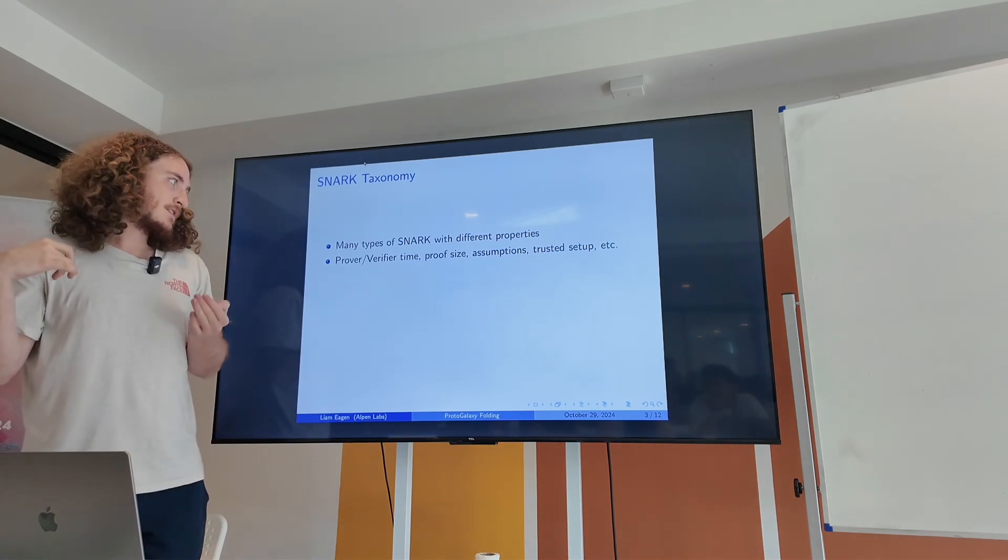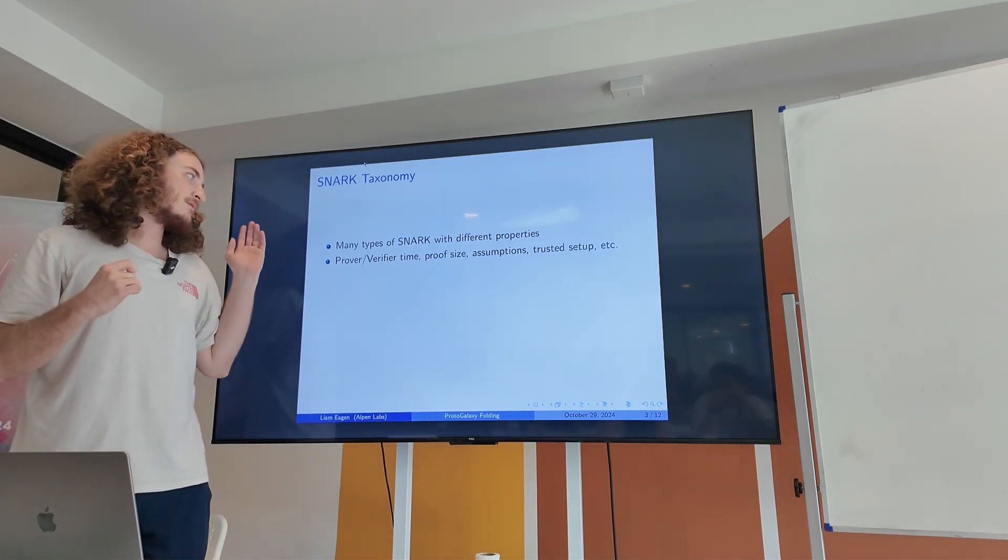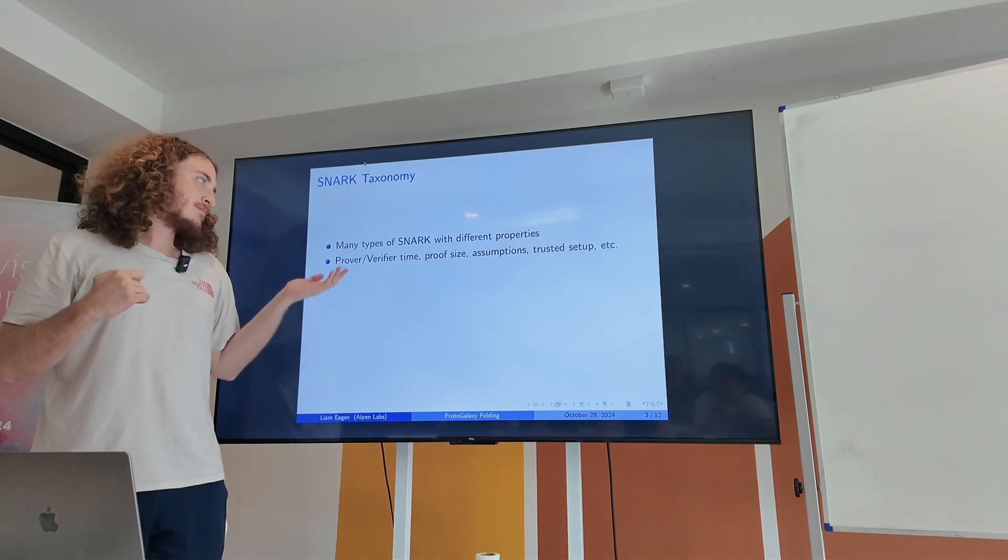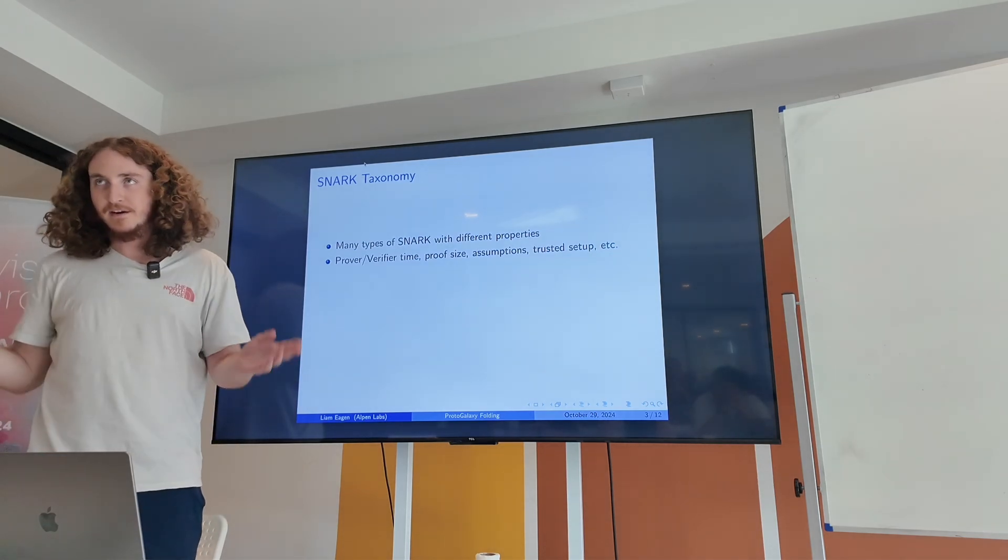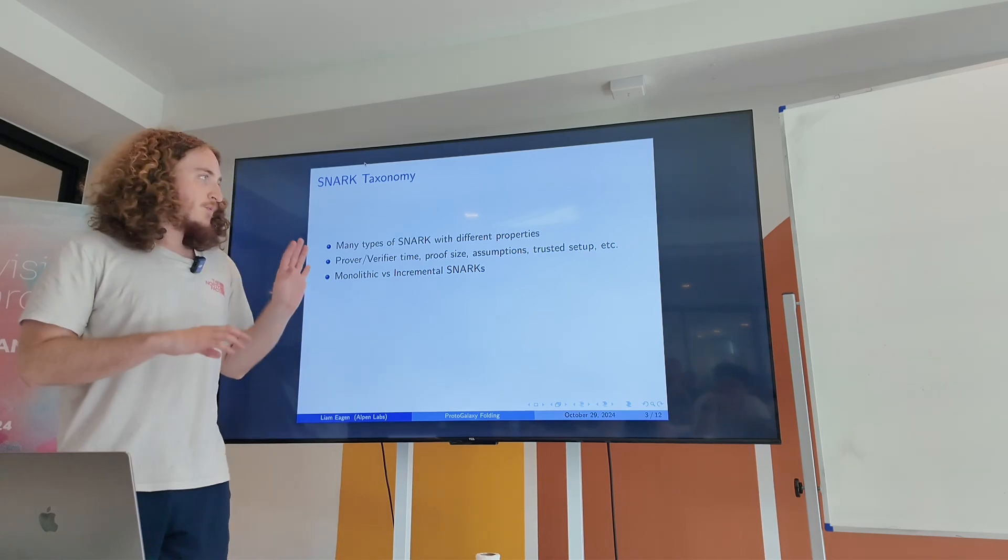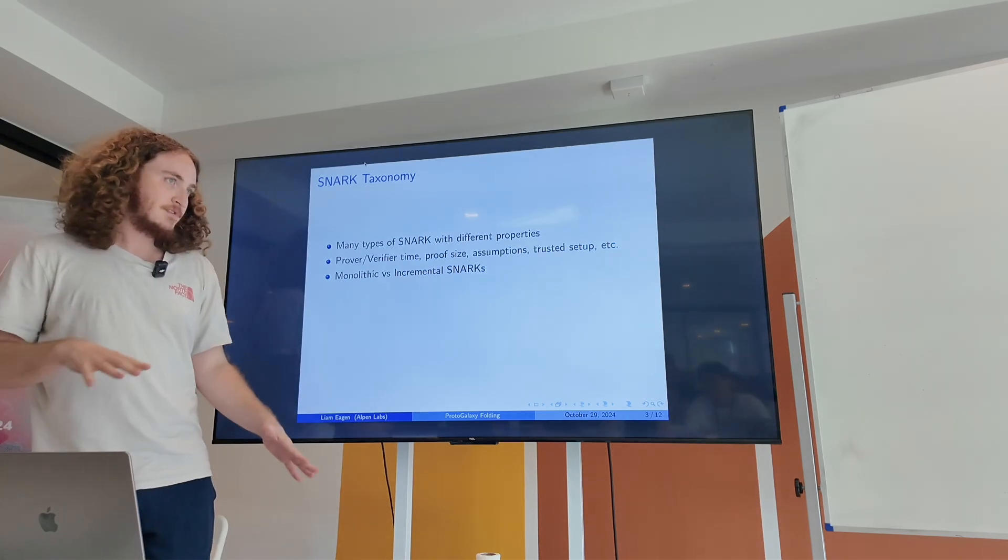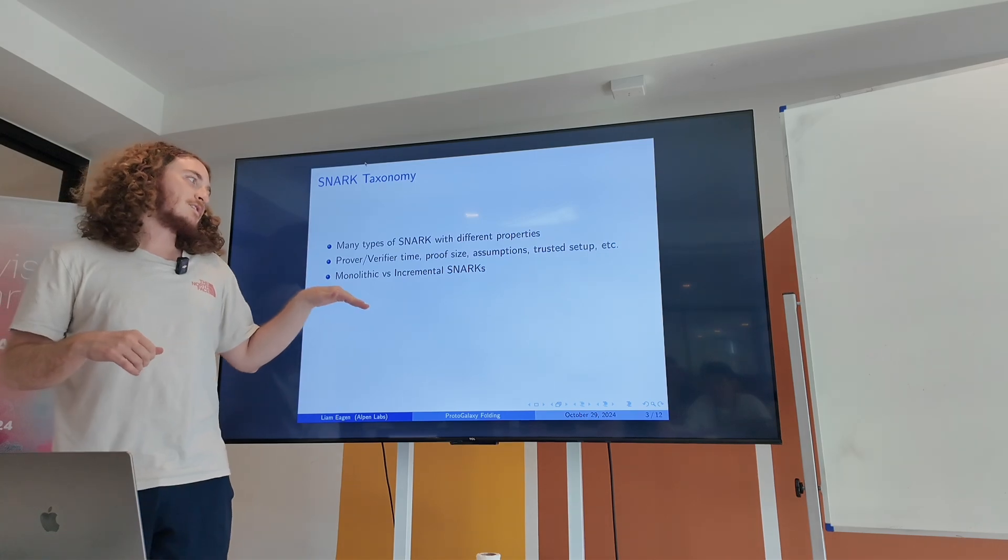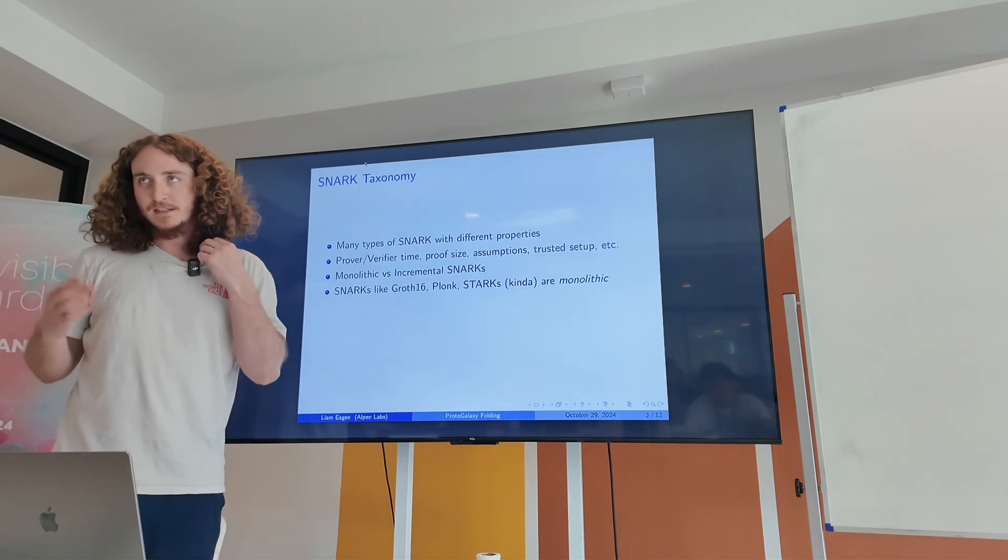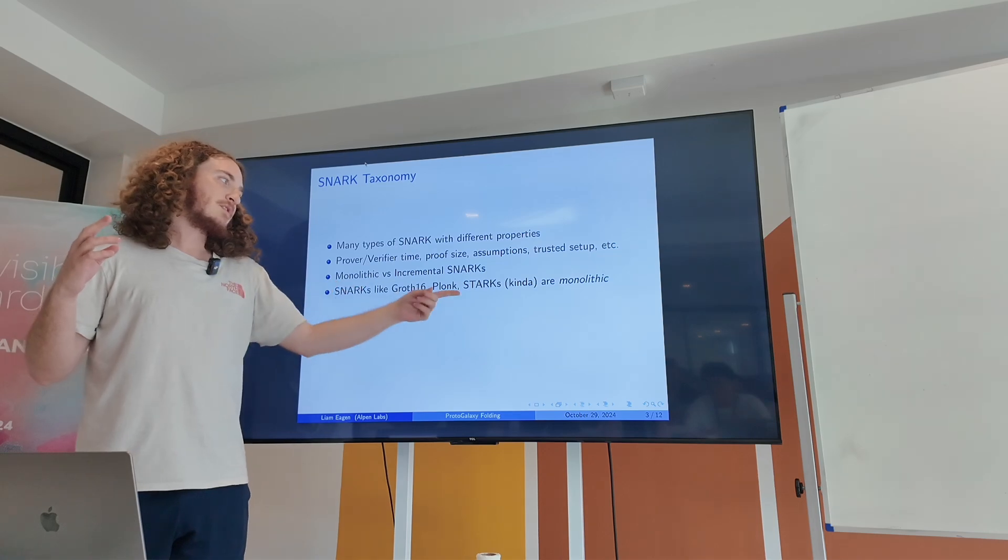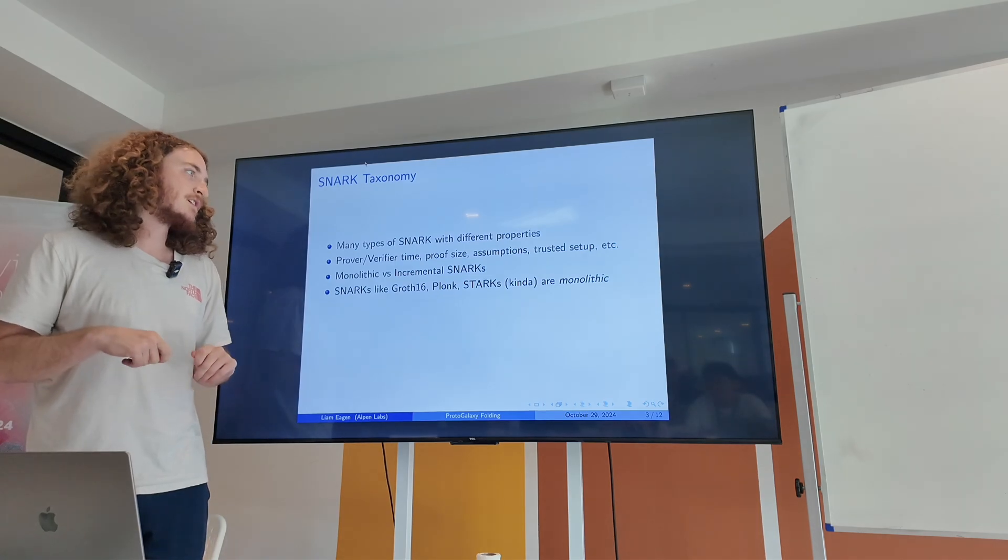They trade off between things like prover verifier time, proof size, security assumptions, trusted setup. For example, STARKs will have a really fast prover but they'll have a big proof. Versus Groth16 will have a trusted setup and it will have a relatively less performant prover. They use different things like hashes or pairings, quantum resistant and whatnot.